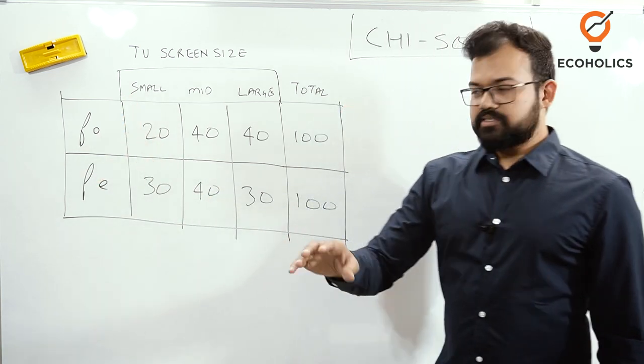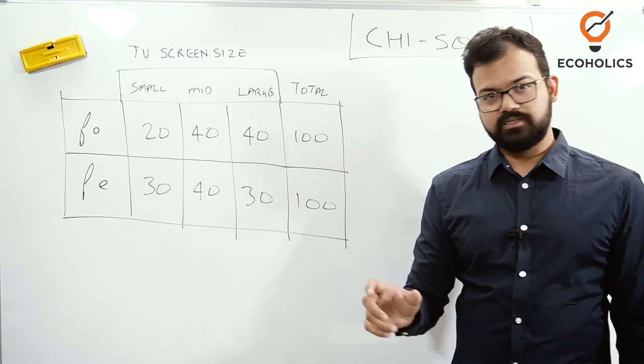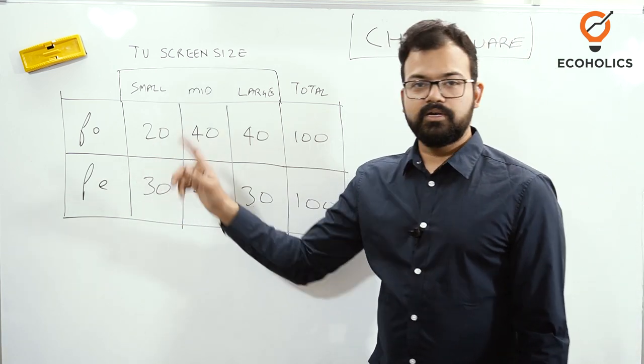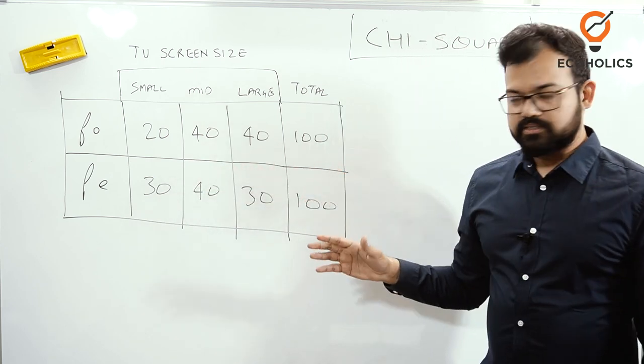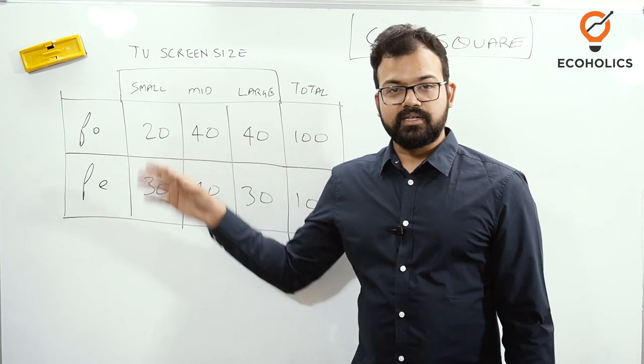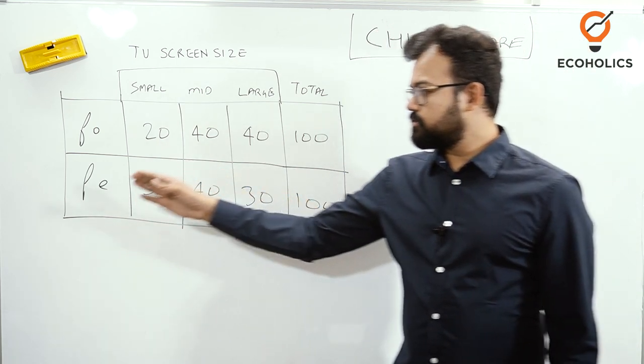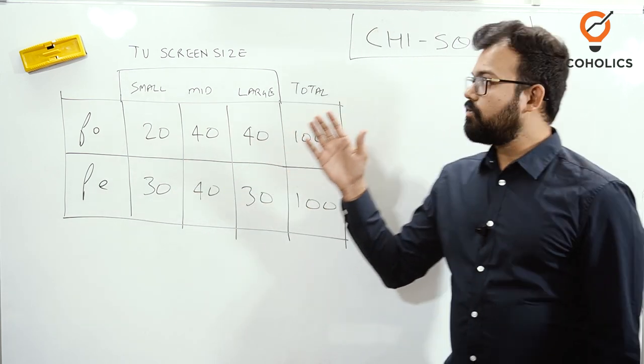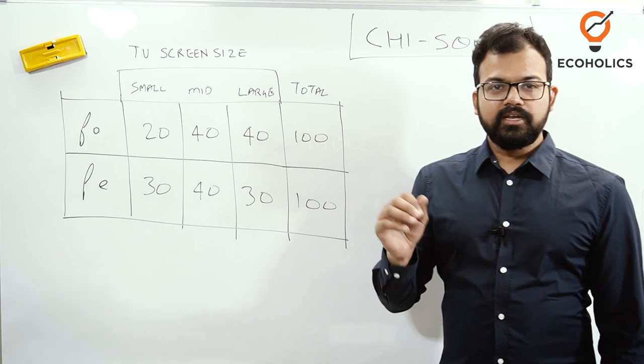This is the observed one. For example, you have ordered 30 televisions of small screen size, but finally you are able to sell only 20. The total of 100 is equal, but now we need to see the difference. Like we have seen in the previous lecture in the theory, the difference between expected and observed we'll see with the help of the chi-square.